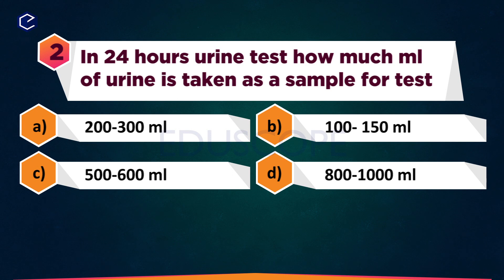In a 24-hour urine test, how much ml of urine is taken as a sample for the test? A: 200 to 300 ml, B: 100 to 150 ml, C: 500 to 600 ml, D: 800 to 1000 ml.